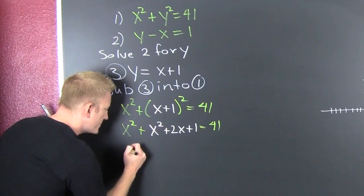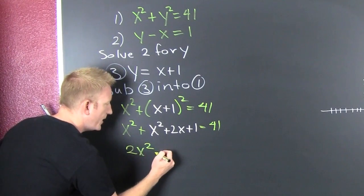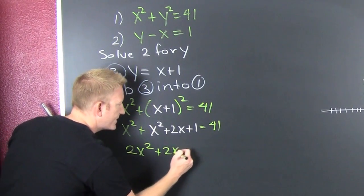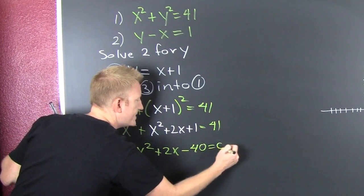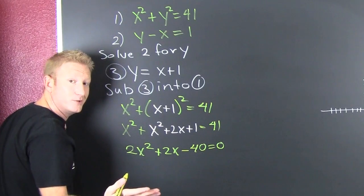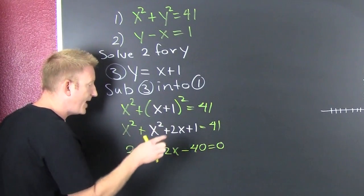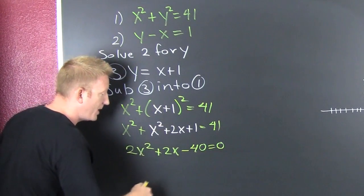Back that math up. Get it all on one side. So I have 2x squared plus 2x and then minus 40 is equal to 0. And now I'm going to attempt to factor. But before that, I'm going to divide everything by 2.